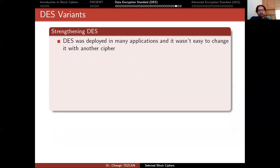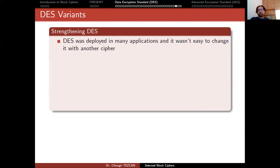DES is now broken because the key is really short, and people tried to strengthen it. It was deployed in many applications, and it wasn't easy to replace with another cipher. At the software level you can implement a new cipher, though sometimes it's not easy if it's embedded in an operating system. At the hardware level it is not easy at all — you have to rebuild the device. This is why it is not a simple task to stop using one cryptographic algorithm and move to another.